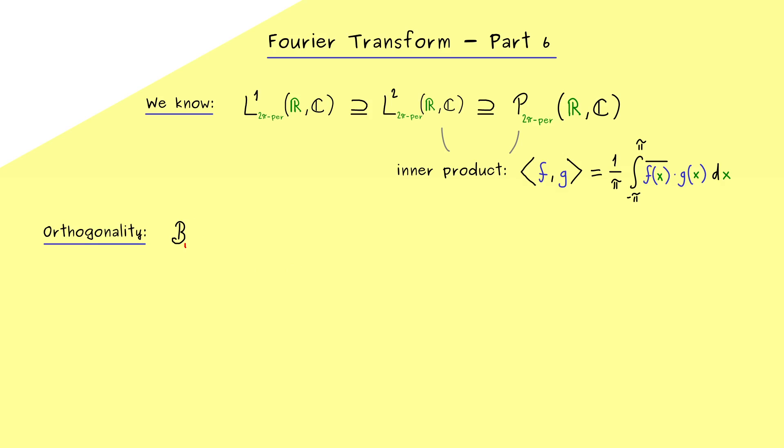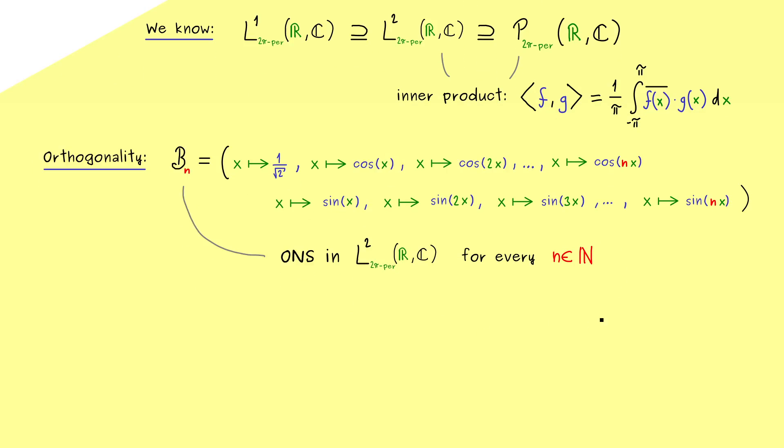And let's call it b with an index n. And inside this family I want to have the constant function, which we choose as x is sent to the constant 1 over the square root of 2 and the cosine and sine functions. Which means we have cosine of x, cosine of 2x and so on. However, let's stop these functions at the natural number n. And then naturally we do the same with the sine functions. So if you want to count we have 2n plus 1 functions inside this family. And please recall from the last videos that this is an orthonormal system in L2 for every n. So in short we would say it's an ONS in L2 with respect to this inner product. And now you might already see that in the end we want to make n bigger and bigger. But at the moment we don't consider any limits, we just consider a fixed n here.